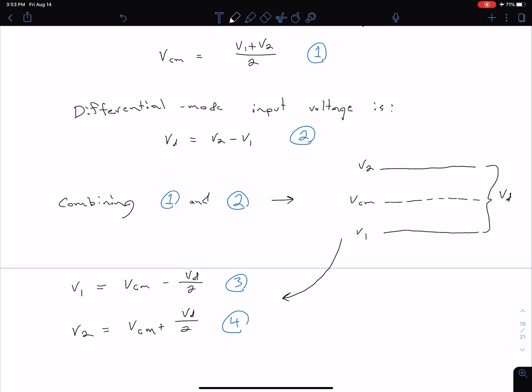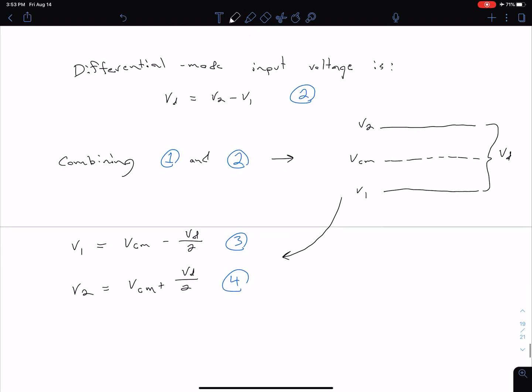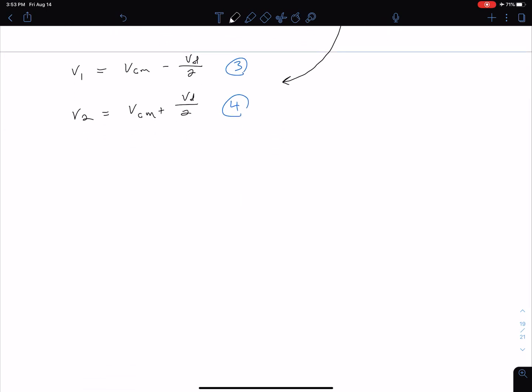Regardless of how you get to these equations, we now have all these expressions. One other thing we want to define is our output voltage in general is going to be some expression related to our common mode gain as well as our differential mode gain. In general that's going to be given by output voltage equals our differential gain times our differential voltage plus our common mode gain times our common mode voltage. Let's label this as equation 5.